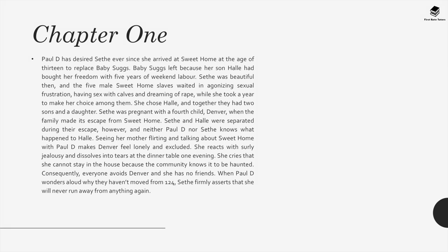Paul D. had desired Sethe ever since she arrived at Sweet Home at the age of 13 to replace Baby Suggs. Baby Suggs had left because her son Halle bought her freedom with five years of weekend labour. The five male Sweet Home slaves waited in agonising sexual frustration while Sethe took a year to make her choice among them. She chose Halle and together they had two sons and a daughter. Sethe was pregnant with a fourth child, Denver, when the family made its escape from Sweet Home. Sethe and Halle were separated during their escape, and neither Paul D. nor Sethe knows what happened to Halle.